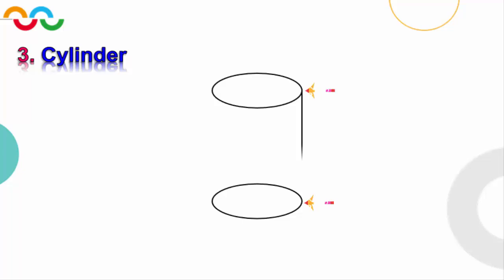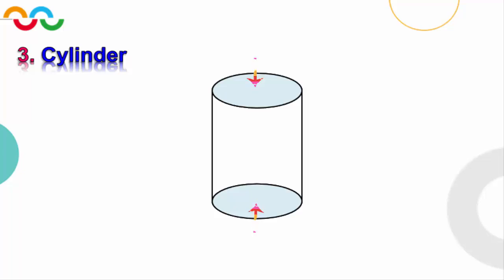The second oval is identical to the first one and in symmetry. Then we start to connect the two ovals by using straight lines — the first straight line from the right ends of them and the second straight line from the left ends of them. Now we draw a cylinder, and we find that a circular cylinder is a solid which consists of two circular bases.